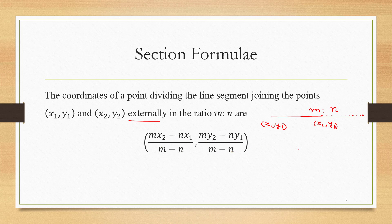The formula is the same as internal, just plus is replaced by minus. Again we write x1,y1 vertically, x2,y2 vertically, and m,n horizontally. The formula is obtained by cross multiplication: mx2 - nx1 divided by m-n, my2 - ny1 divided by m-n. Note that we always have to start with m in the numerator and in the denominator, otherwise there will be a problem.